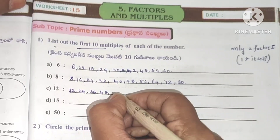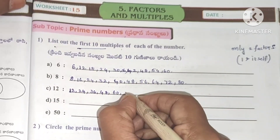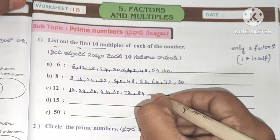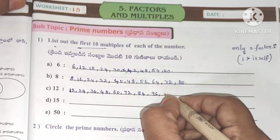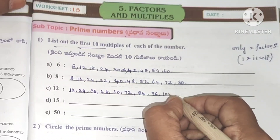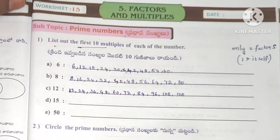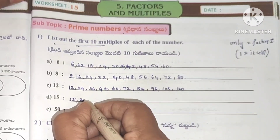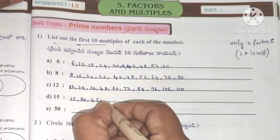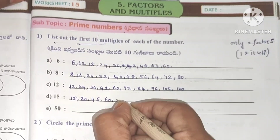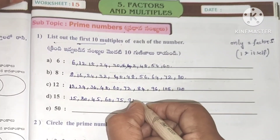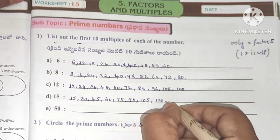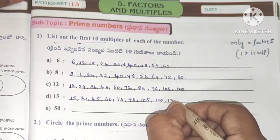Similarly for 12: 12×1=12, 12×2=24, 12×3=36, 12×4=48, 12×5=60, 12×6=72, 12×7=84, 12×8=96, 12×9=108, 12×10=120.